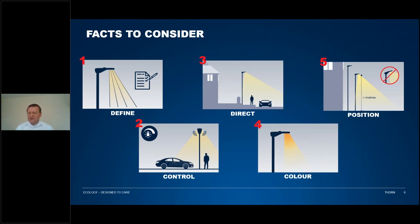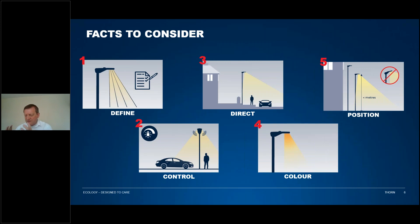Consider where you're directing the lighting. By defining where you don't want the lighting to go, that gives you constraints and makes you understand: yes, I want to light this space and I don't want the light to go here. Then you can direct it to the right space and make sure it doesn't go to the wrong space.